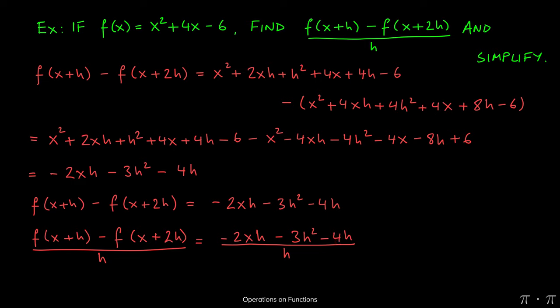However, what I can do is factor an h out of the numerator because this first term has it, the second term has it, and the third term has it as well. So there's a GCF or greatest common factor of h, which can be factored out, leaving behind negative 2x minus 3h minus 4 on the inside, divided by h.